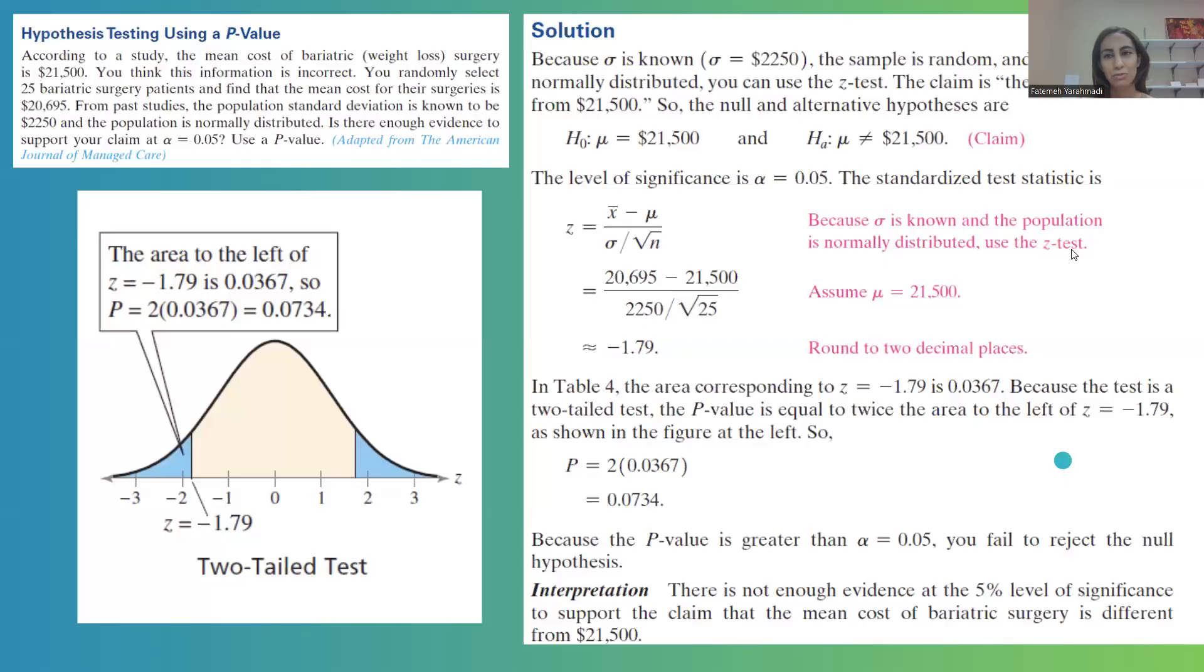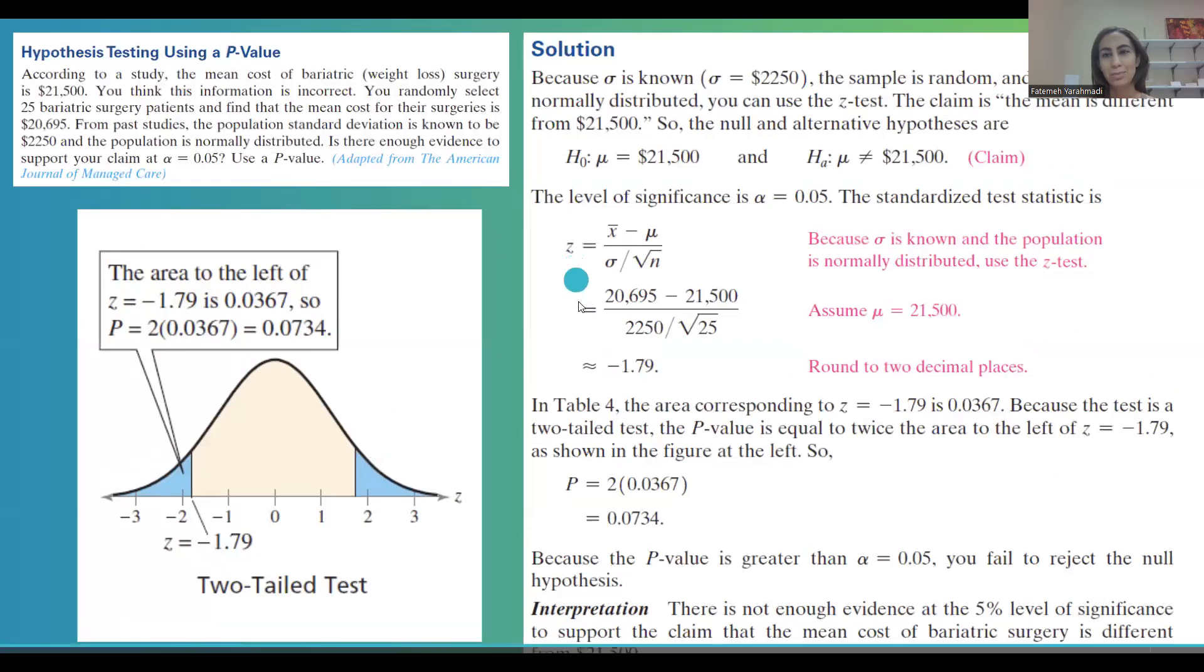And here's a quick summary for you. You have the graph and the steps to follow. The null hypothesis: mu is $21,500. Alternative hypothesis which is your claim is not. Since sigma is given to you, you can find your z which is x bar minus mu divided by sigma over square root of n or negative 1.79.